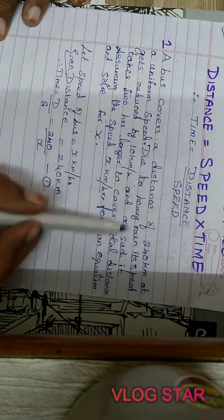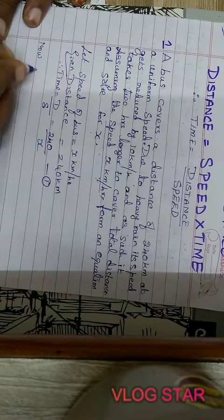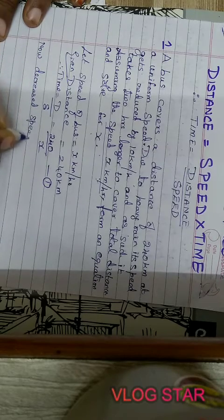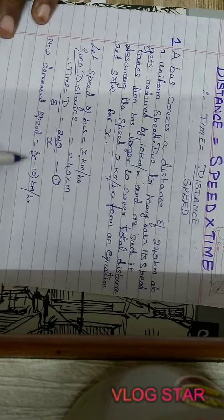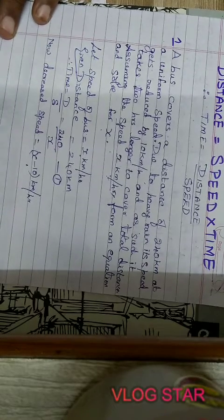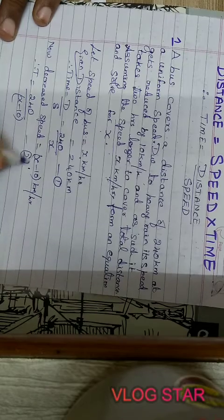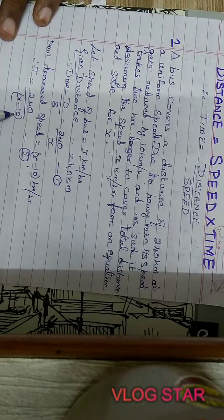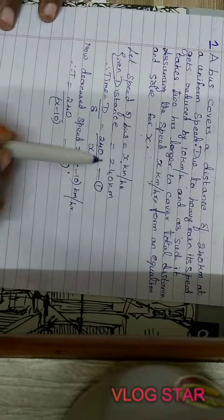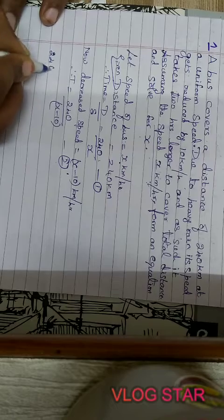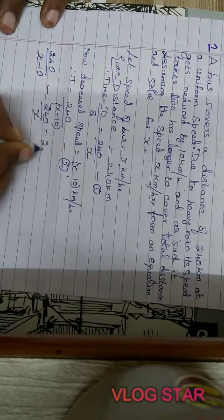Now, they have given due to heavy rain its speed gets reduced. Reduced means it decreased. So the decreased speed is x minus 10 kilometer per hour. We have assumed the original speed as x. Now the speed decreased, so we write it as x minus 10 for the same distance 240. Therefore, time is equal to 240 divided by x minus 10 — distance divided by speed. They have given when the speed decreases, it takes 2 hours longer to cover the total distance. So the difference between the times is 2 hours. I can write: 240 divided by (x minus 10) minus 240 by x is equal to 2.